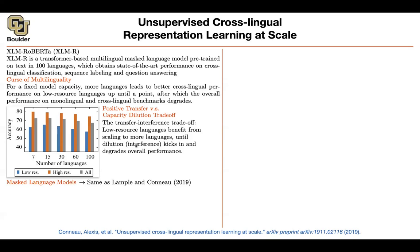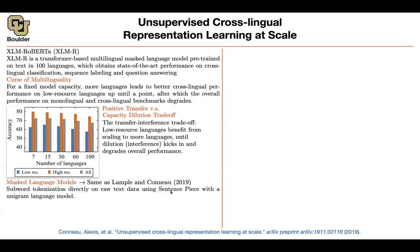How can you deal with that? Increase the capacity of your model. If you have more languages, your model needs to have more parameters and a higher capacity. The model architecture is the same as the previous paper — a masked language model. Previously we were using byte-pair encoding; now we are going to use SentencePiece with the unigram language model.